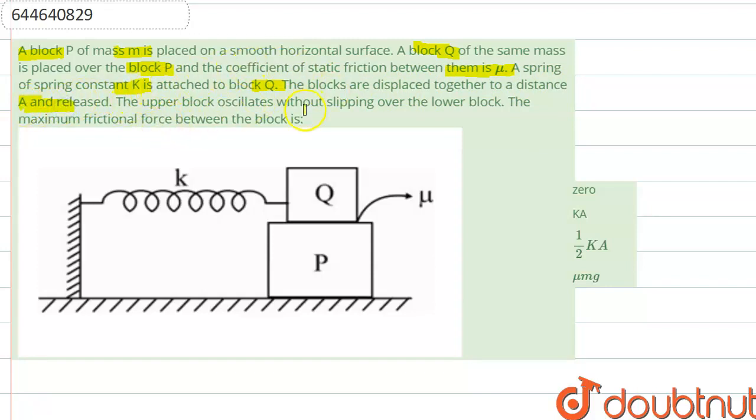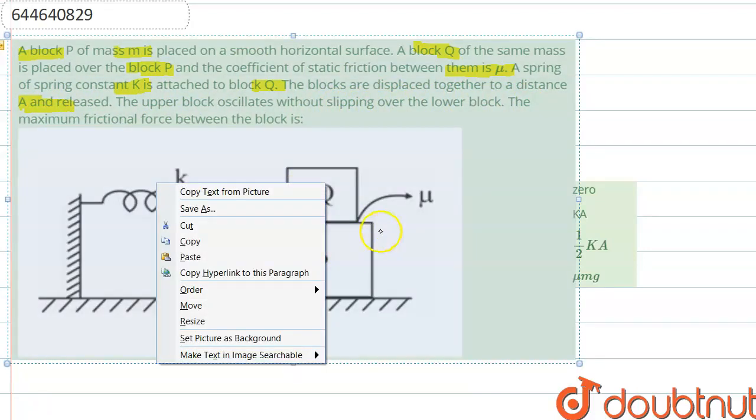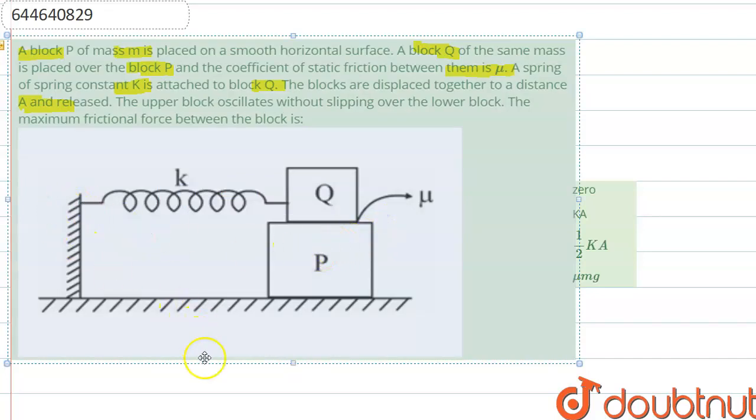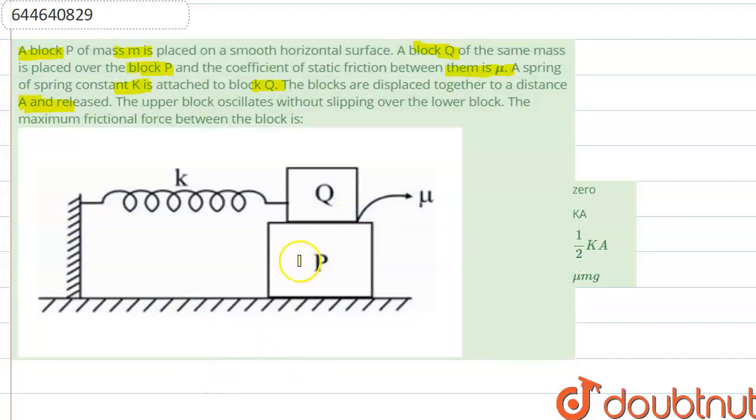The upper block oscillates without slipping over the lower block. So Q block is oscillating on P block without slipping. The question asks for the maximum frictional force between the blocks. Basically, in this question we are given that these two blocks have a frictional force with coefficient μ.